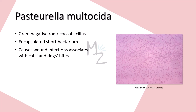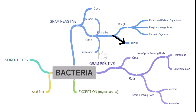Pasteurella multocida is a gram-negative rod or coccobacillus. A coccobacillus is a shape somewhere between the spherical coccus and the rod-shaped bacillus, so you'll see it sometimes like a rod or both together. It's an encapsulated, short bacterium responsible for causing wound infections associated with cat and dog bites.